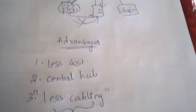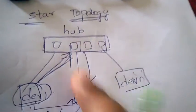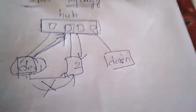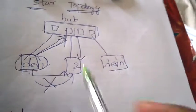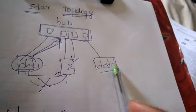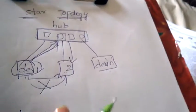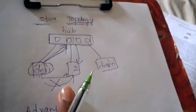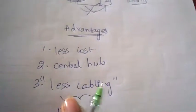In contrast, star topology has the advantage of less cabling. There is a central hub connected to all devices, so there is no need for direct wires between every device pair. This reduces the amount of wiring significantly, saving resources. These are the advantages of star topology.